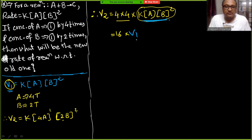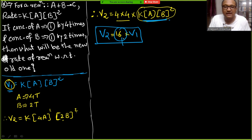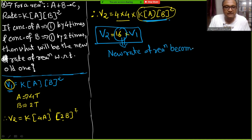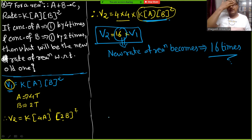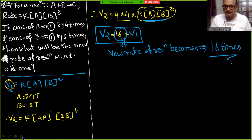Therefore V2 = 16 V1, meaning the new rate of reaction becomes 16 times the old rate.